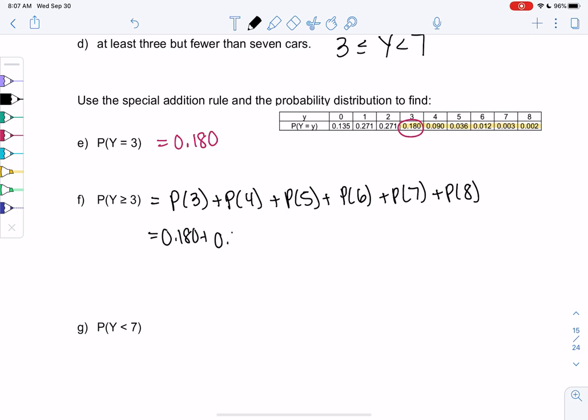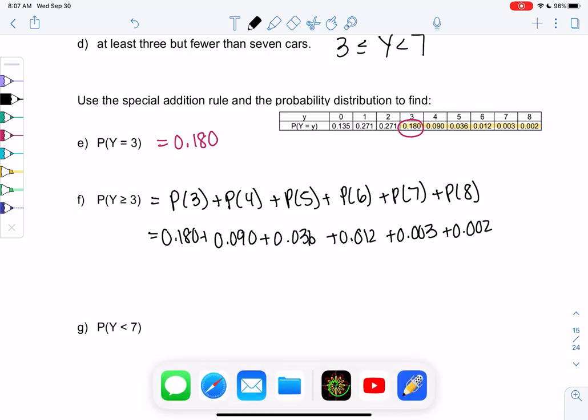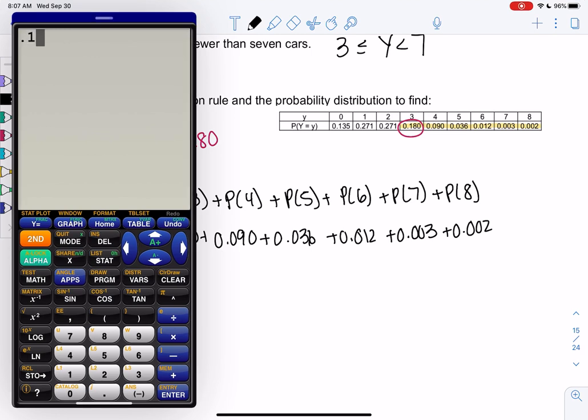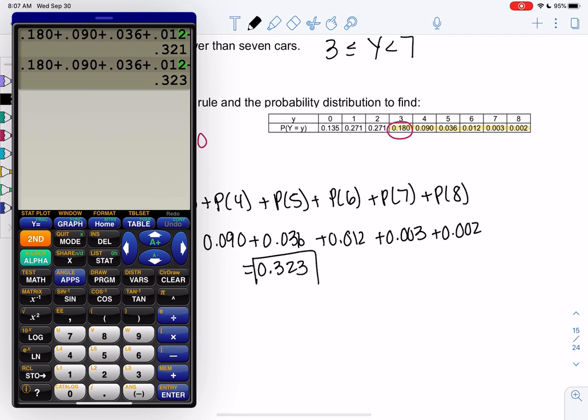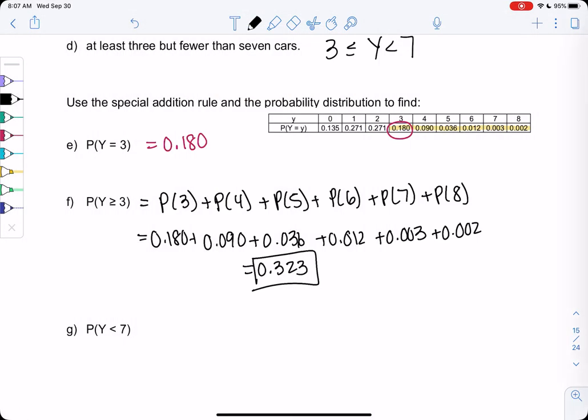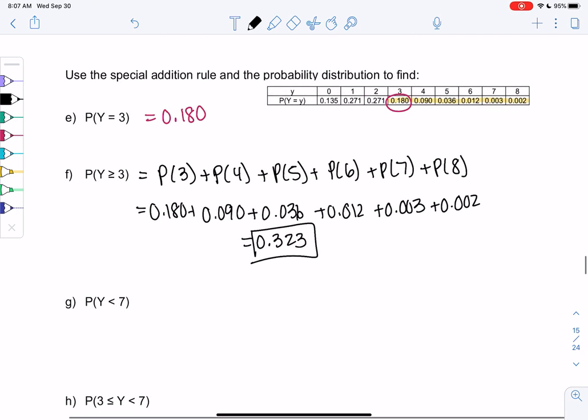So we're going to go ahead and add those all up. If you want to write it out, I'm going to write out all the probabilities, just so when you look back you remember what we added. But at least means 3 or more. So I'm adding the probabilities of 3 or more. So 0.180, 0.090, plus 036, plus 012. So the chance of selling at least 3 cars would be 32.3% chance of selling at least 3 cars.